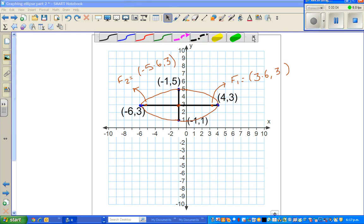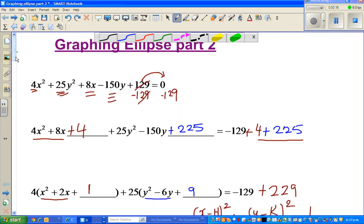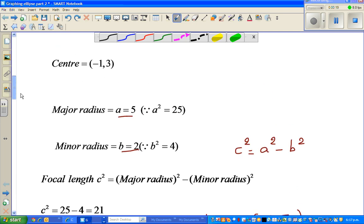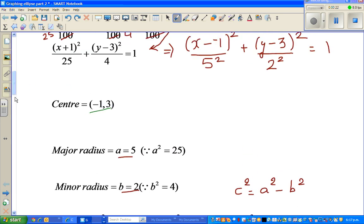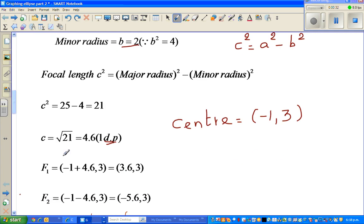In the last video, this is where we stopped. We were graphing this parabola, sorry, the ellipse. So we saw the center was negative 1, 3, the major radius is 5, minor radius is 2, and the focal length is 4.6. So one focal length would be 4.6 to the right, and the other would be 4.6 to the left.